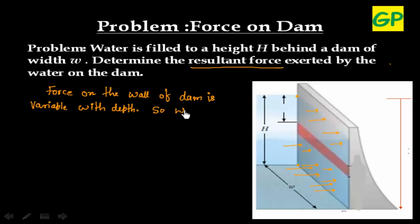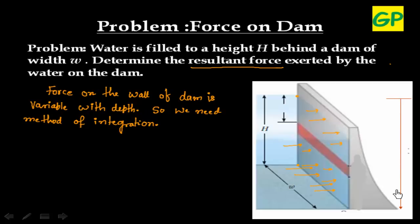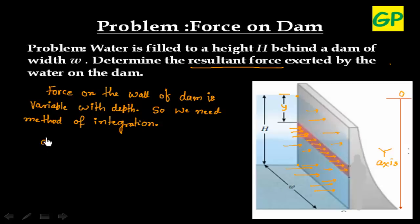So we need a method of integration. Let us define the y-axis in the downward direction — this is my y-axis, with 0 at the top. Let us consider a strip at a depth of y from the top, and try to find what force is acting on this strip. The water is applying some force over this strip, and we want to calculate that force, which we call dF.